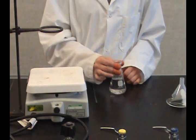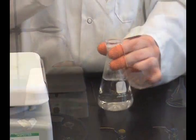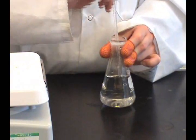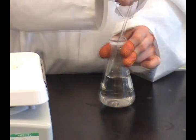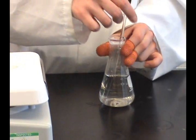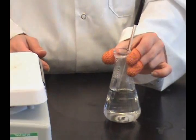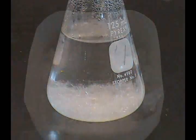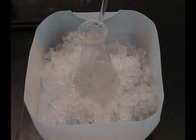Remove the flask with the filtrate from the hot plate. Scratch the sides of the flask with a glass rod and allow it to cool to room temperature. Fast cooling produces small crystals that may trap impurities. When the solution reaches room temperature, place it in an ice bath for about five minutes.